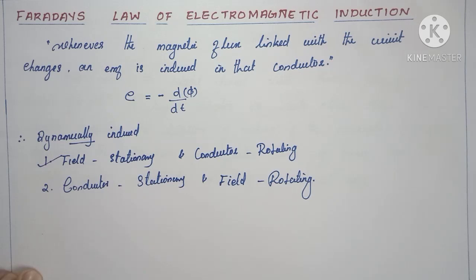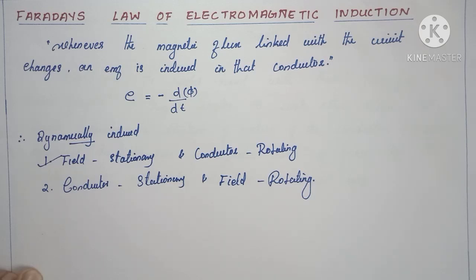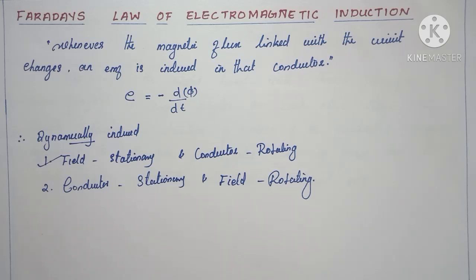The field winding is kept stationary and must produce the necessary magnetic lines of force. This is made possible by applying an external DC source to the field winding. When the field winding is excited by this DC source, it generates the necessary flux. With the conductor rotating inside the field windings via the prime mover, these two actions together lead to the generation of EMF.